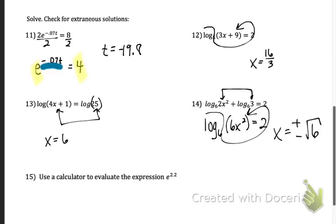In problem 15, it says to use a calculator to evaluate e to the 2.2. So once you plug that in your calculator, you get approximately 9.03.